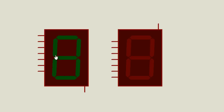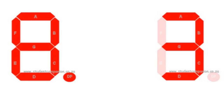A 7-segment display is not different from an LED. By turning on the appropriate segment, we can display any digit from 0 to 9 and optionally the decimal point if needed. 7-segment bars are commonly referred to by the letters A up to G.